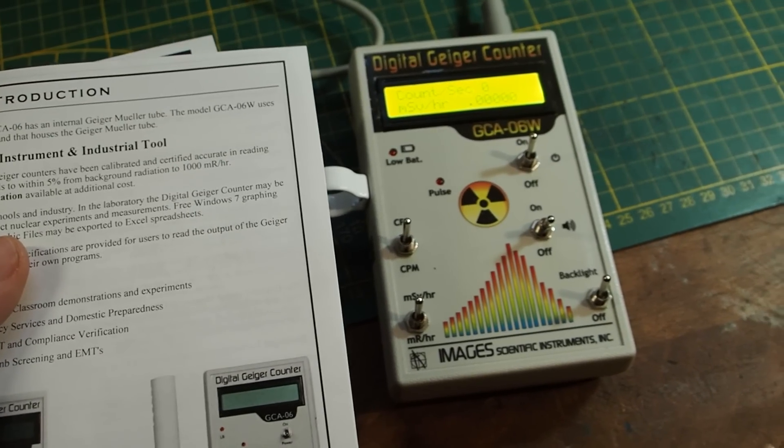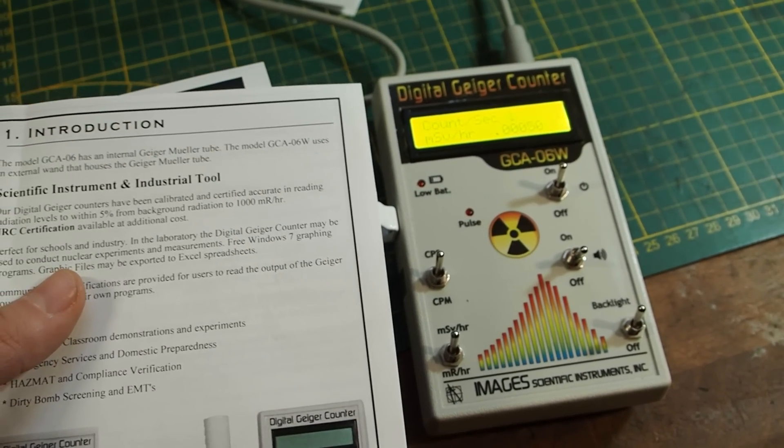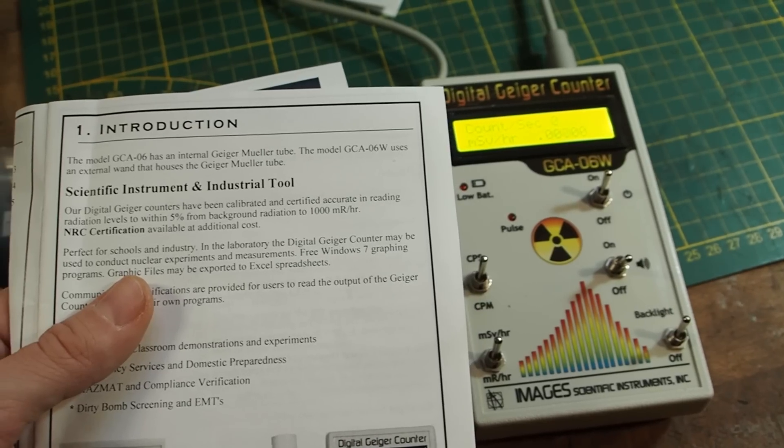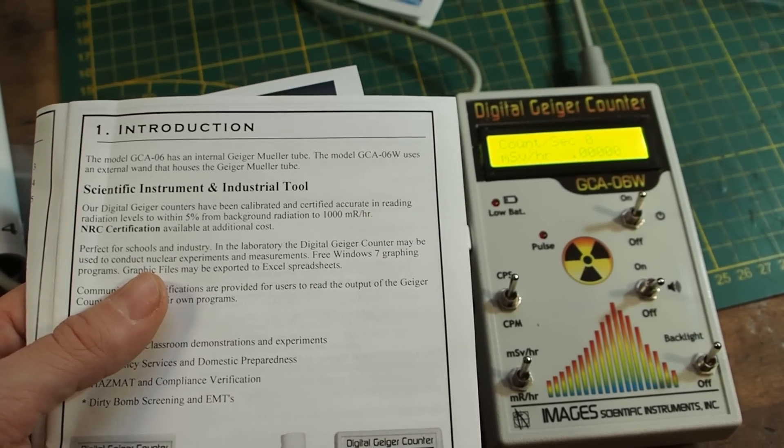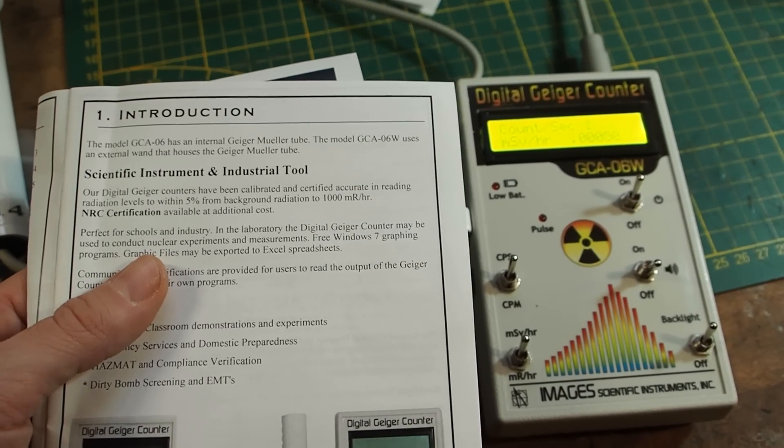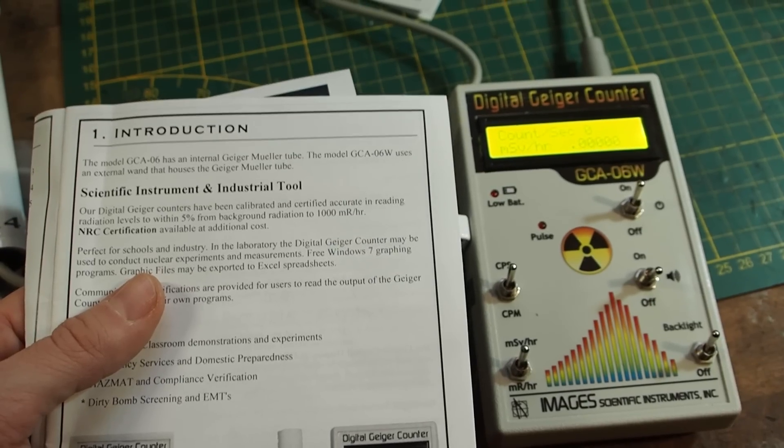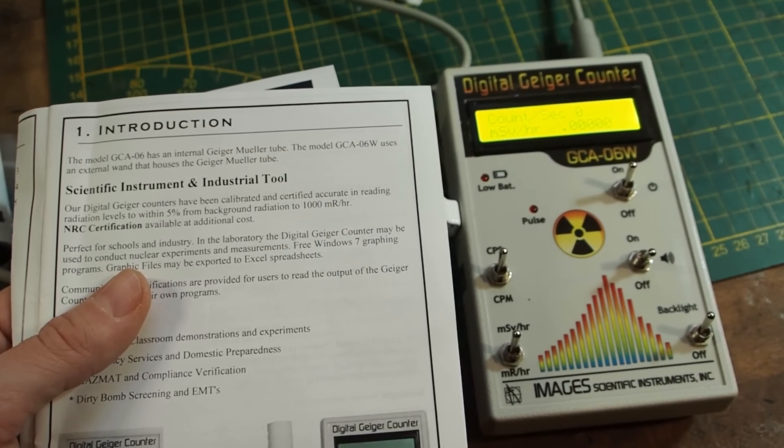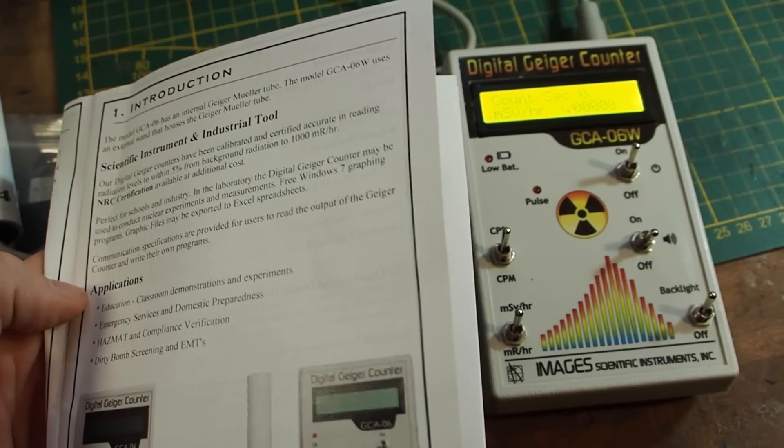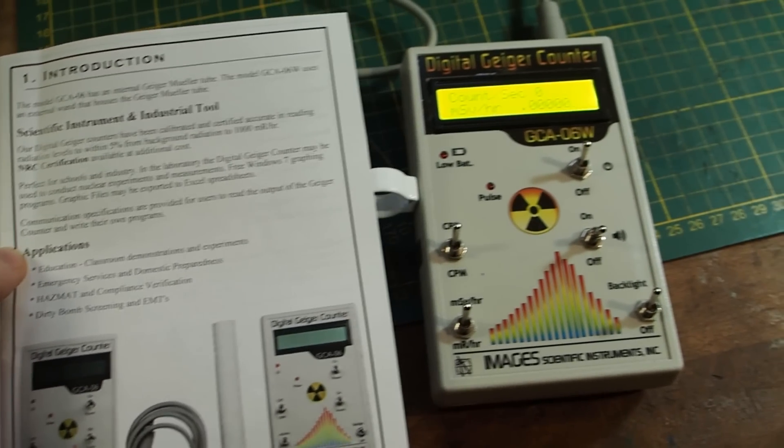So what are the limitations of this Geiger counter? It can measure everything accurately within five percent from background radiation to 1000 millirad per hour. So yeah that's pretty good. We have a wide range of measuring.